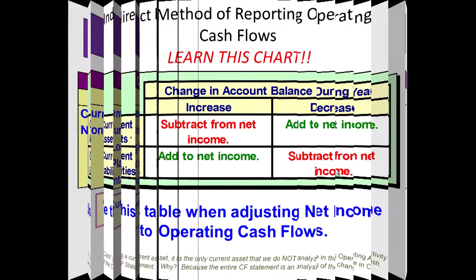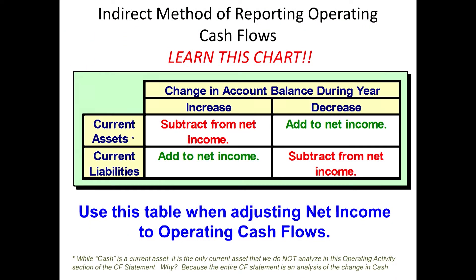What we're going to do is analyze the changes in current assets and current liabilities. There is only one current asset we are not going to analyze in this manner, and that is cash. Cash is a current asset, but we do not analyze it in this operating section because the entire cash flow statement is an analysis of the change in cash. For your current assets that increase, we are going to subtract those from net income. For your current assets that decrease, we are going to add those to net income.